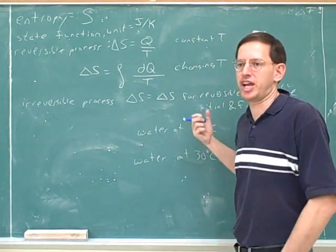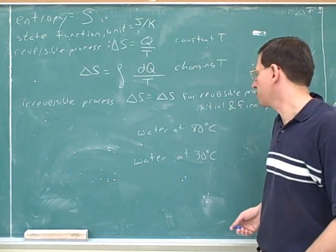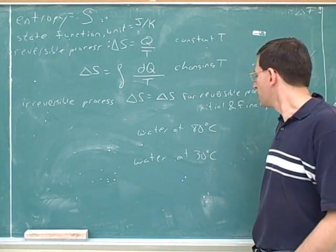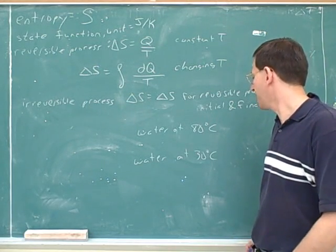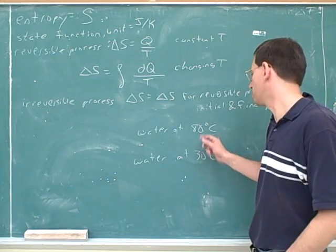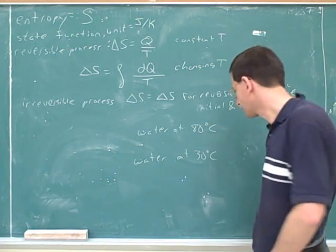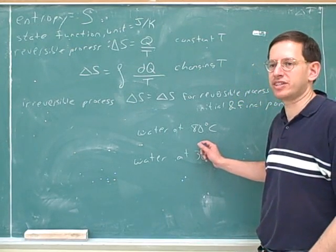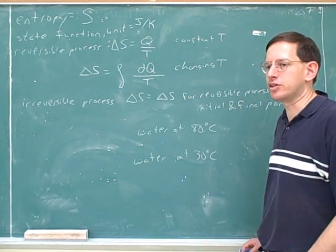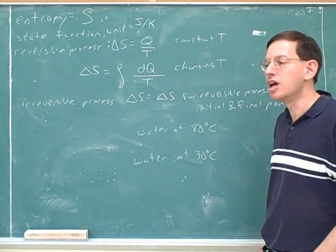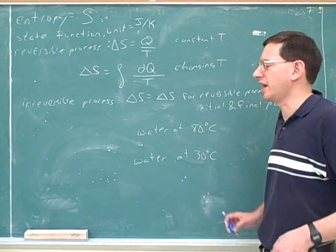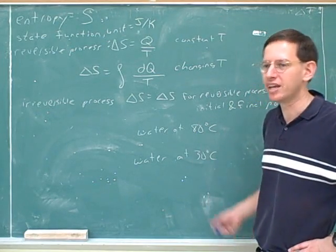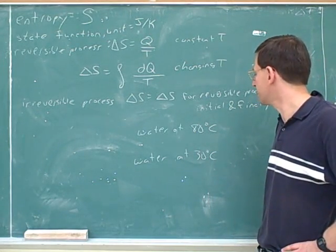What about when the temperature is changing? That's another common type of problem. Let's say we put together water at 80 degrees Celsius and water at 30 degrees Celsius. We know that what's going to happen is that these two temperatures are going to move towards each other — some of the water will cool and some will heat up. This is not really a reversible process, because we would not expect the two temperatures to spontaneously move further apart. Once they reach the same temperature, they won't go back to 30 and 80. So technically, this is an irreversible process.